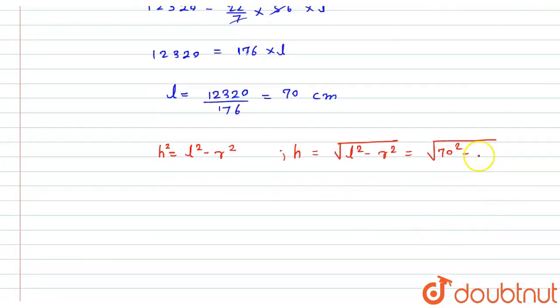So here what it will become: 70 square will be 4,900 minus 56 square is 3,136. After subtracting this, I will get 1,764.